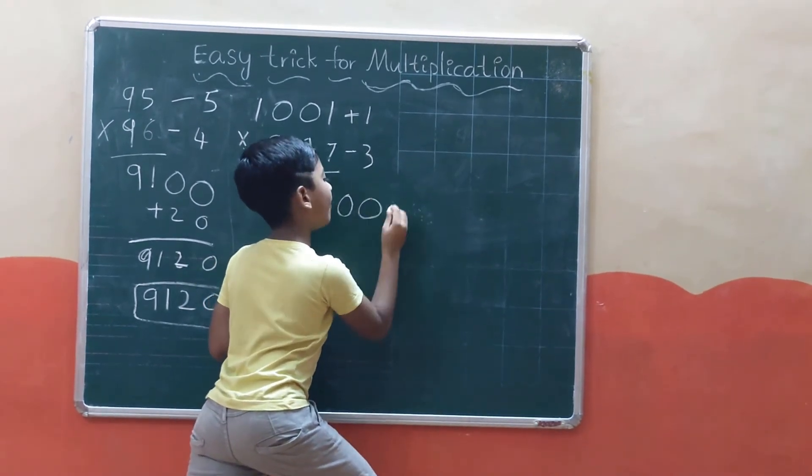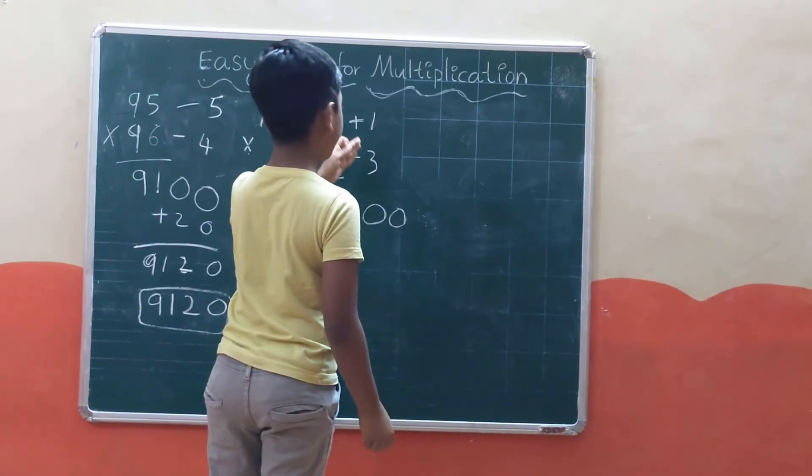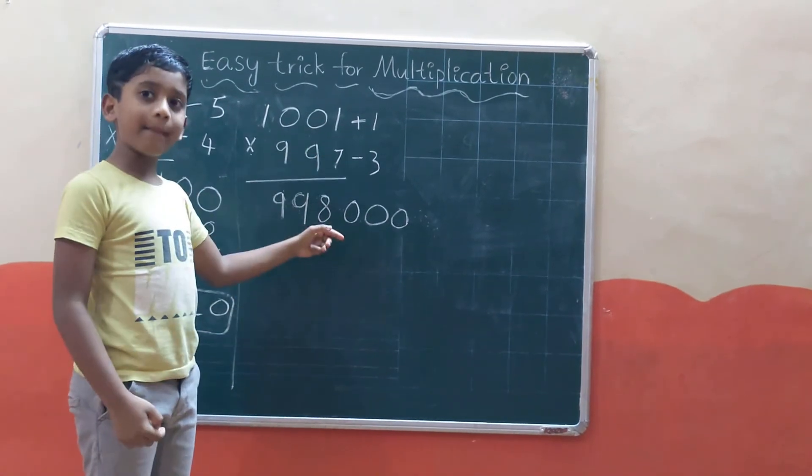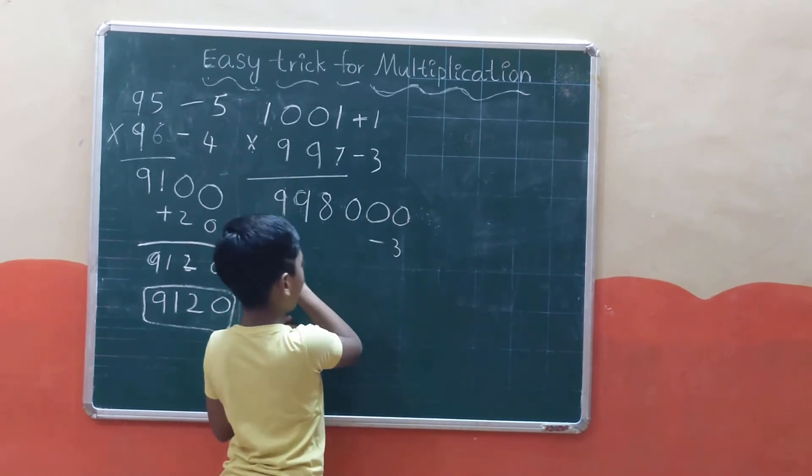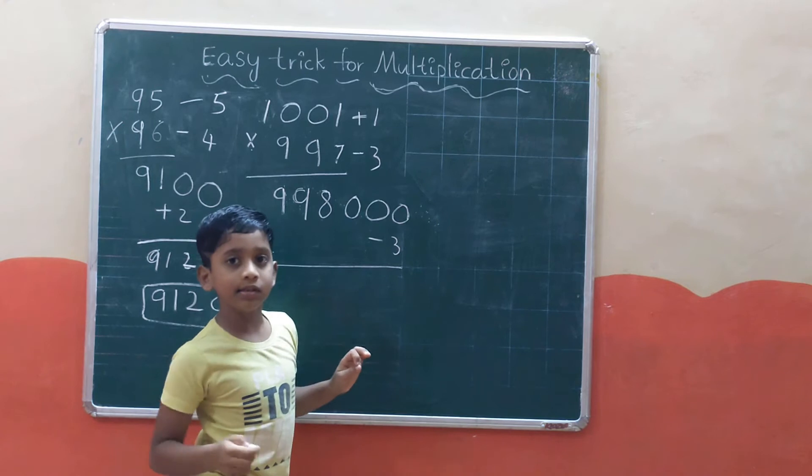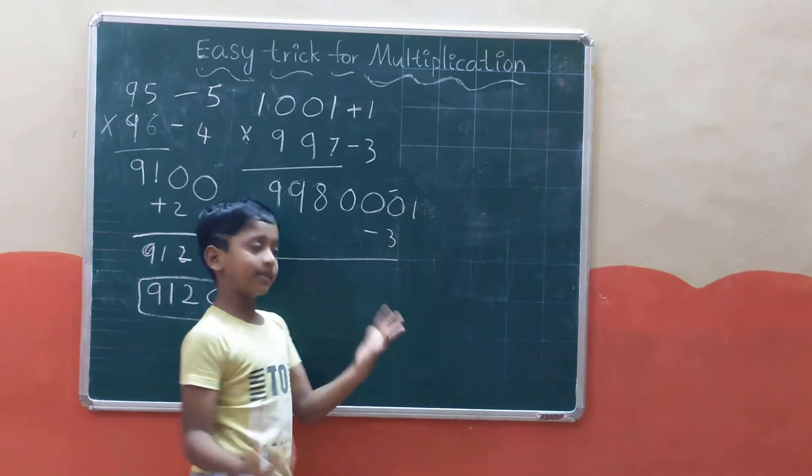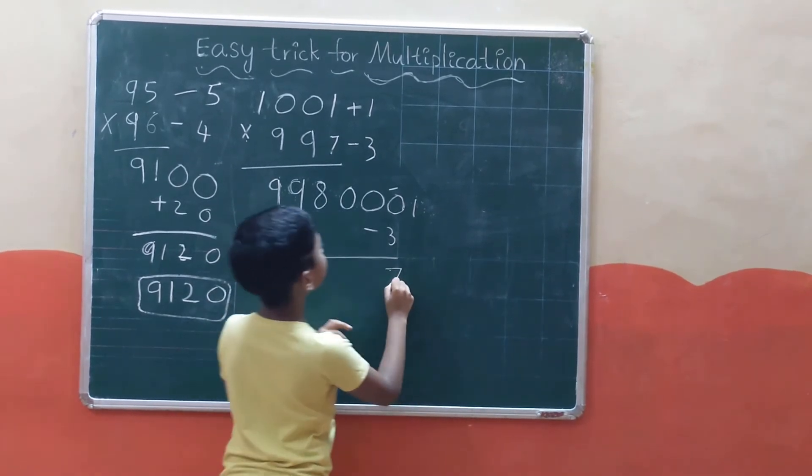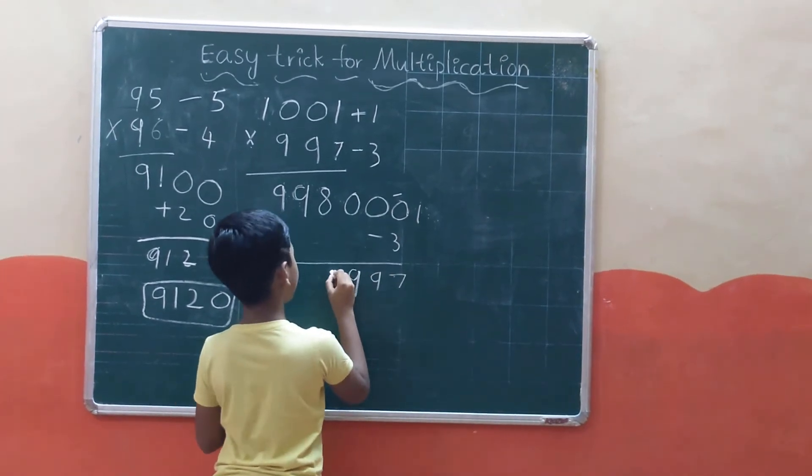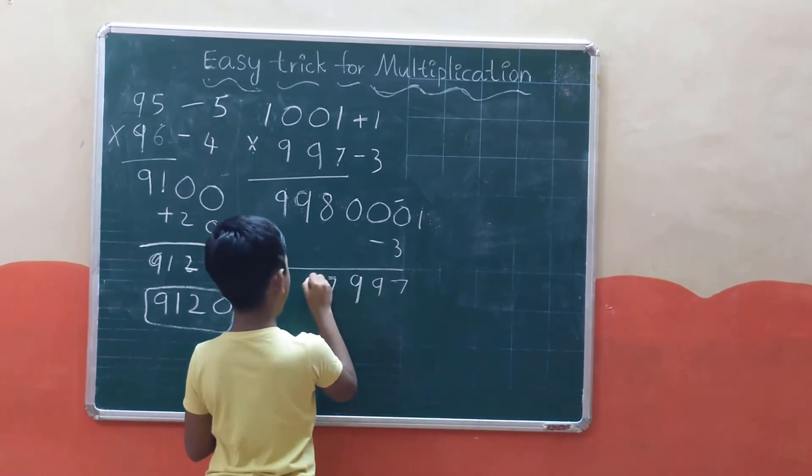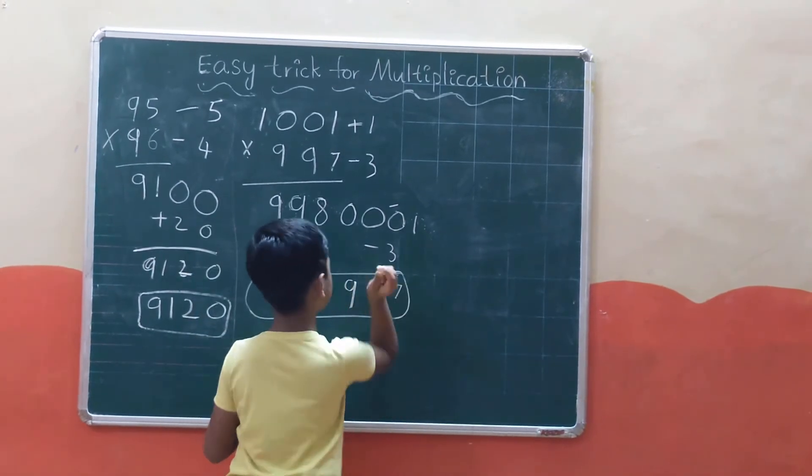Now multiply: 1 times 3. Plus times minus gives minus 3. So we get 997003. This is the answer.